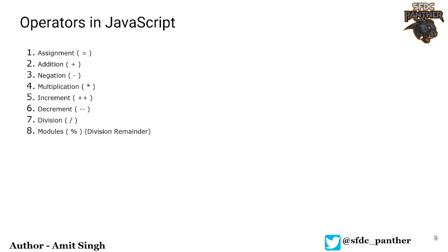Hello everyone, welcome back to the course. In this video we are going to talk about the various operators in JavaScript — operators that we will be using in our day-to-day coding lives. We have the assignment operator, addition, subtraction (negation), multiplication, increment, decrement, division, and the division remainder (modulo) operator. Let's jump into the console to see how each operator works.